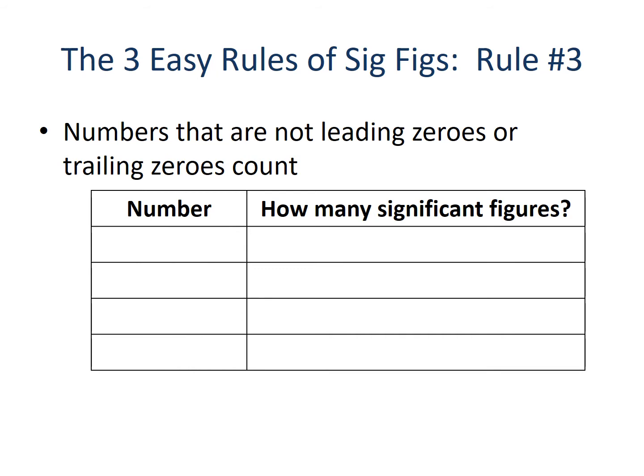Rule number three states that numbers that are not leading zeros or trailing zeros count. If it's not a zero at the beginning or end of a number, those numbers are going to count. Our first example is 447. There are no zeros here, so all the numbers count towards our significant figures — 447 has three significant figures.